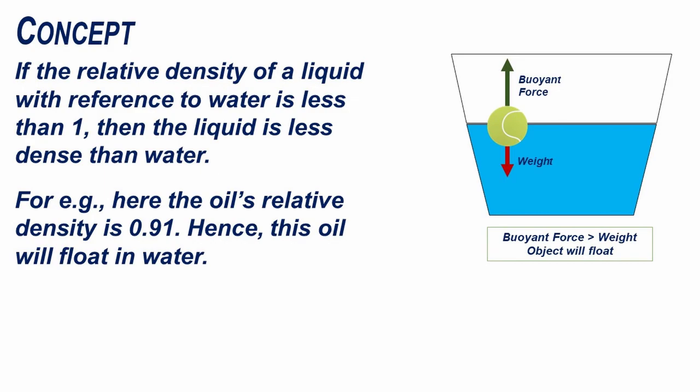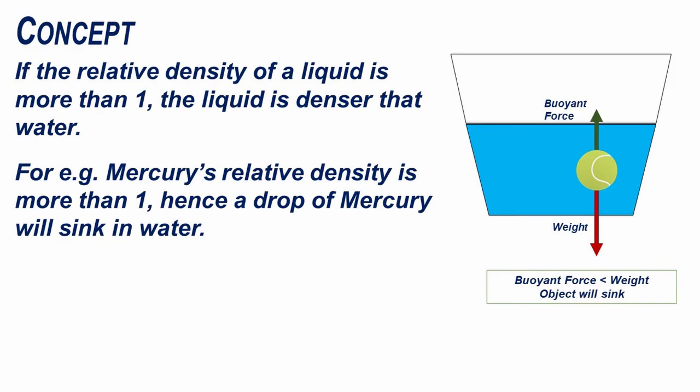If the relative density of a liquid with reference to water is less than 1, then the liquid is less dense than water. For example, here the oil's relative density is 0.91, which is less than 1 — hence this oil will float in water. If the relative density of a liquid is more than 1, the liquid is denser than water. For example, mercury's relative density is more than 1, hence a drop of mercury will sink in water.